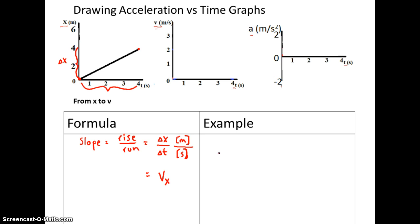Using this example, slope, our change in x, we go from 0 all the way to 4. Our run, we go from 0 all the way to 4. So this just gives us 1 meter per second. This is equal to our velocity in the x direction.